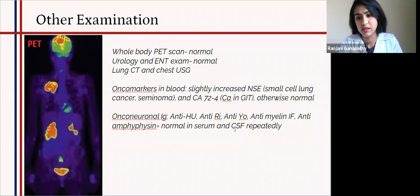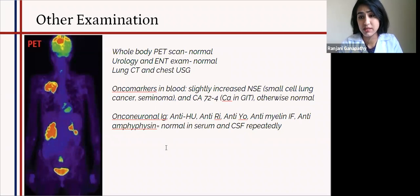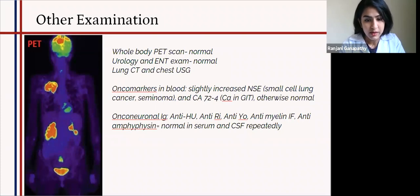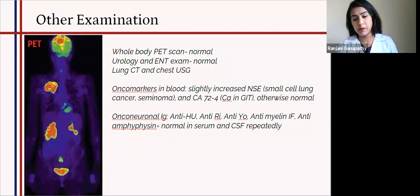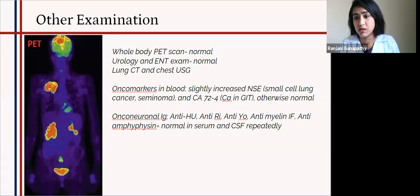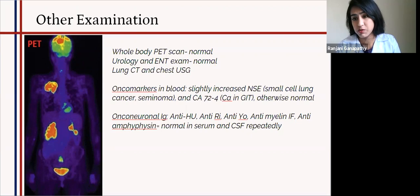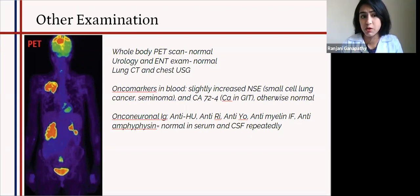Anti-HU, anti-RI, anti-YO, anti-myelin, and anti-amphiphysin — all of these on repeated testing were negative. The important point is that finding nothing on the PET scan doesn't mean we can rule out something paraneoplastic, because opsoclonus-myoclonus syndrome can present up to three years before not only the symptomatology of the cancer, but also before it is visible on a PET scan.